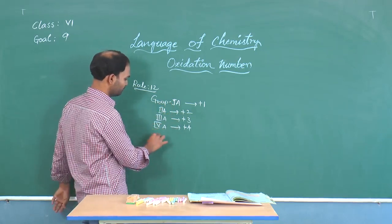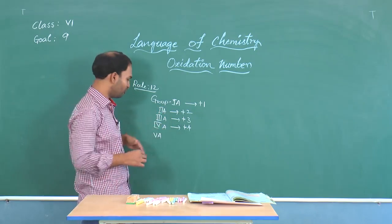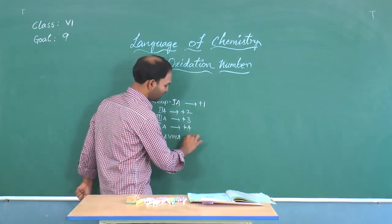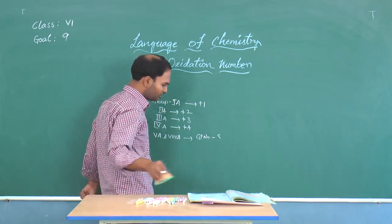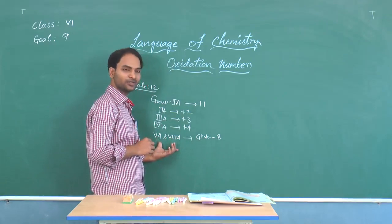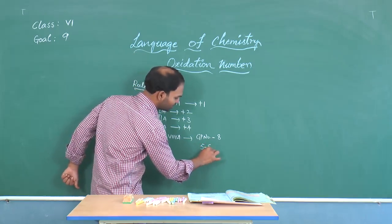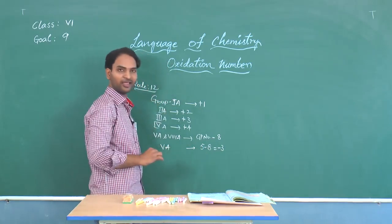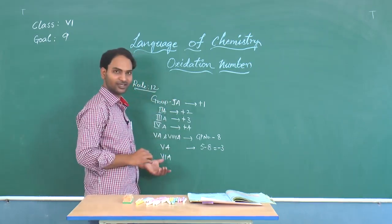When you move from group 5A to 8A, the formula to get the oxidation number is: group number minus 8. For group 5A, that is 5 minus 8, which gives minus 3. Minus 3 is the oxidation state for group 5A elements. For group 6A elements, the calculation is 6 minus 8.